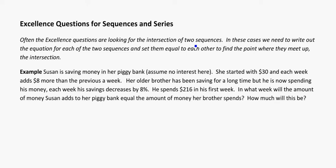In this case, Susan is saving money in her piggy bank, assume no interest. She started with $30, so that's a equals 30, and each week adds $8 more than the previous week. That's saying she's increasing it by the same fixed amount every week, so this is going to be an arithmetic sequence, and that is going to be a difference of 8.